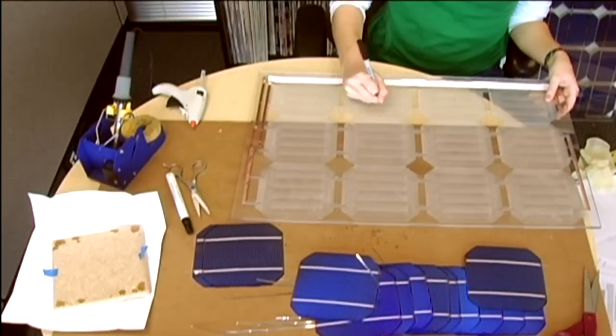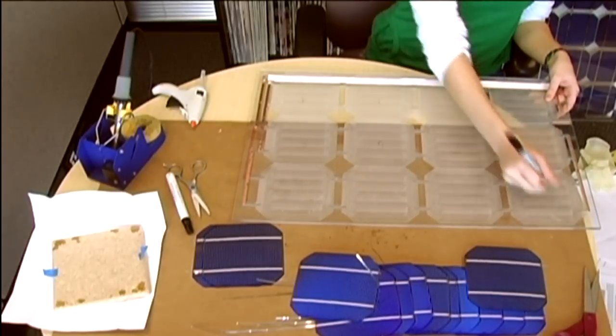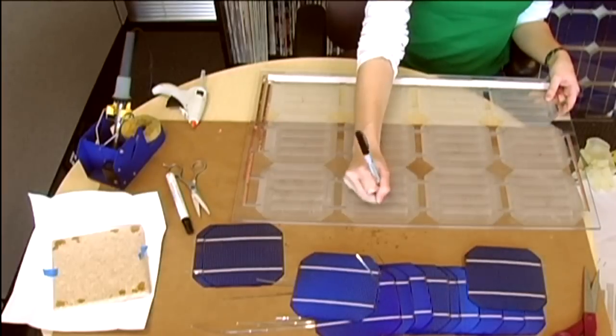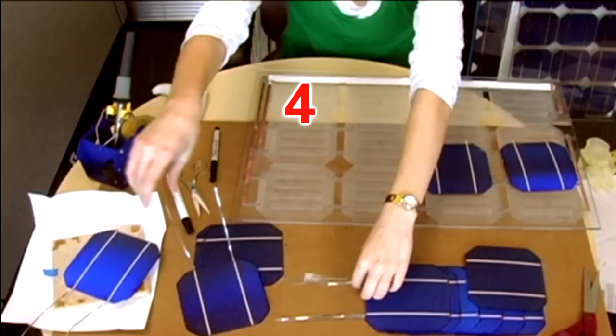First, we'll want to number each cell cavity according to the documentation so that we can easily ascertain what direction and which cell should be placed in each cavity. We'll start with the bottom right cell cavity numbered 4.